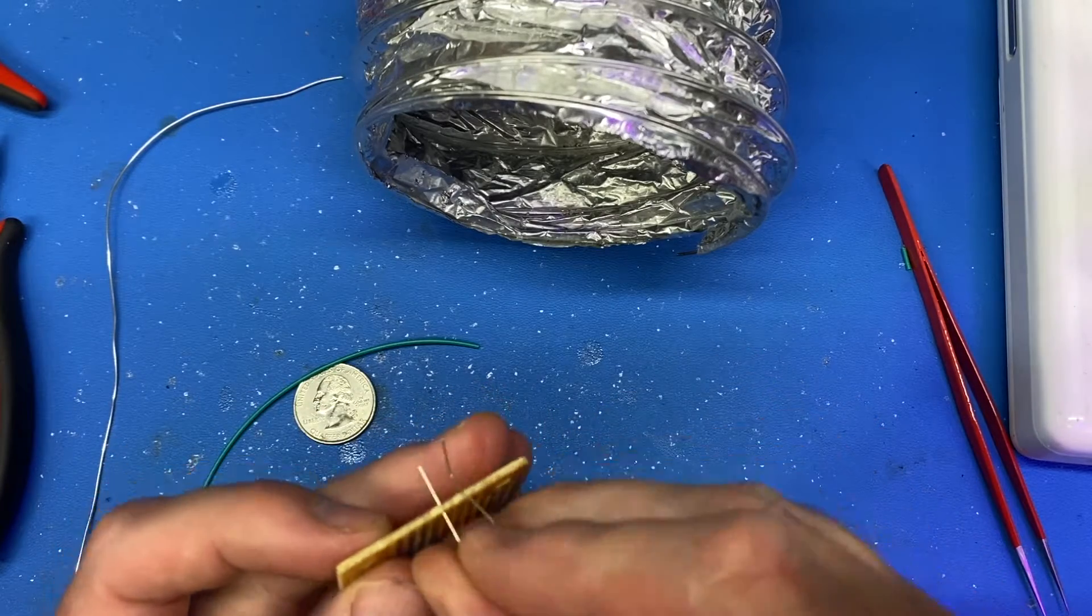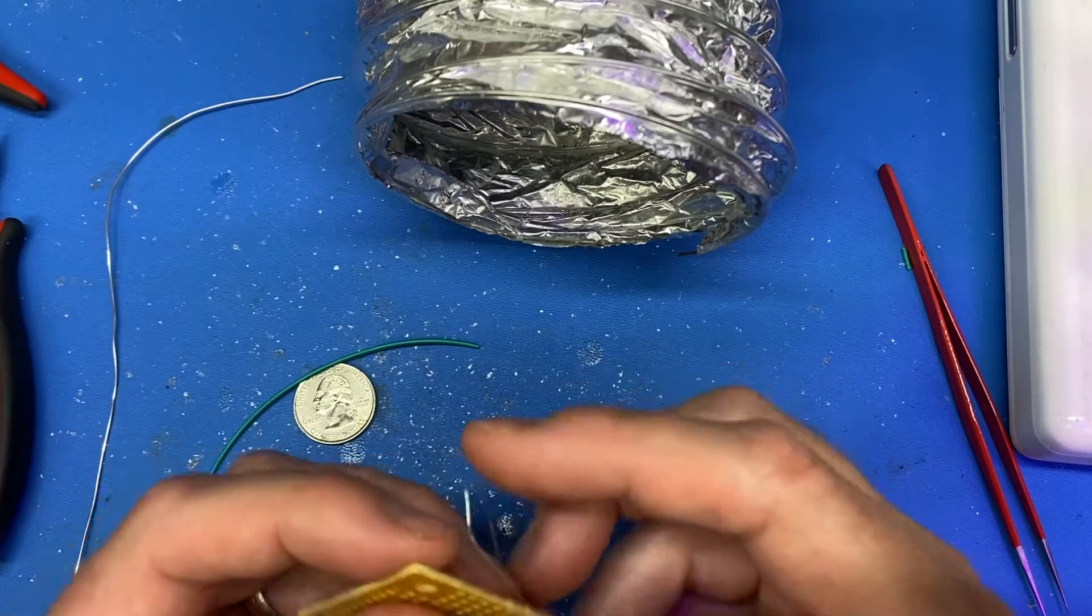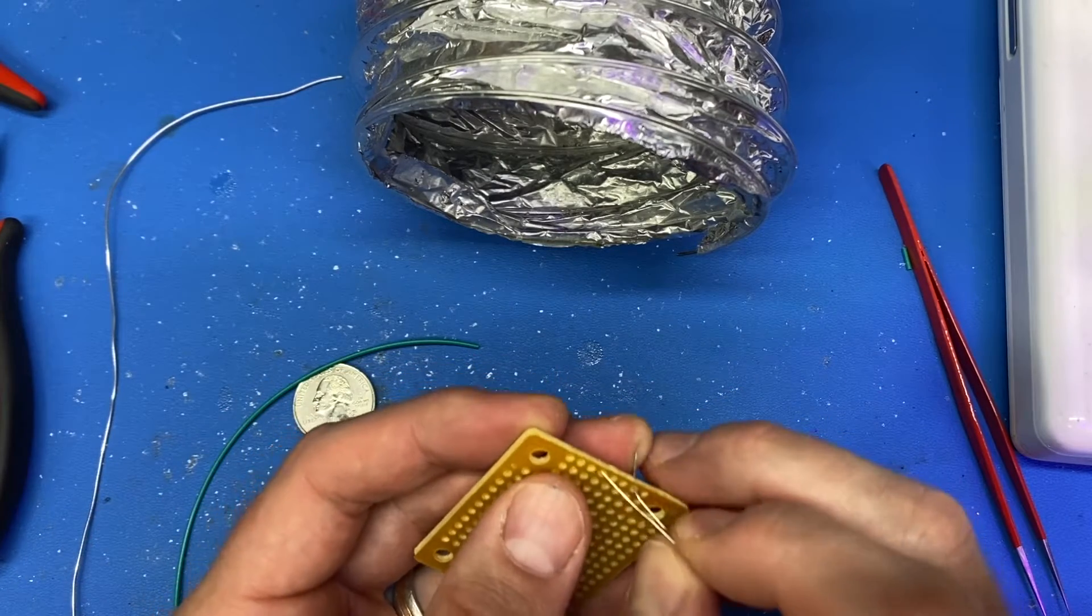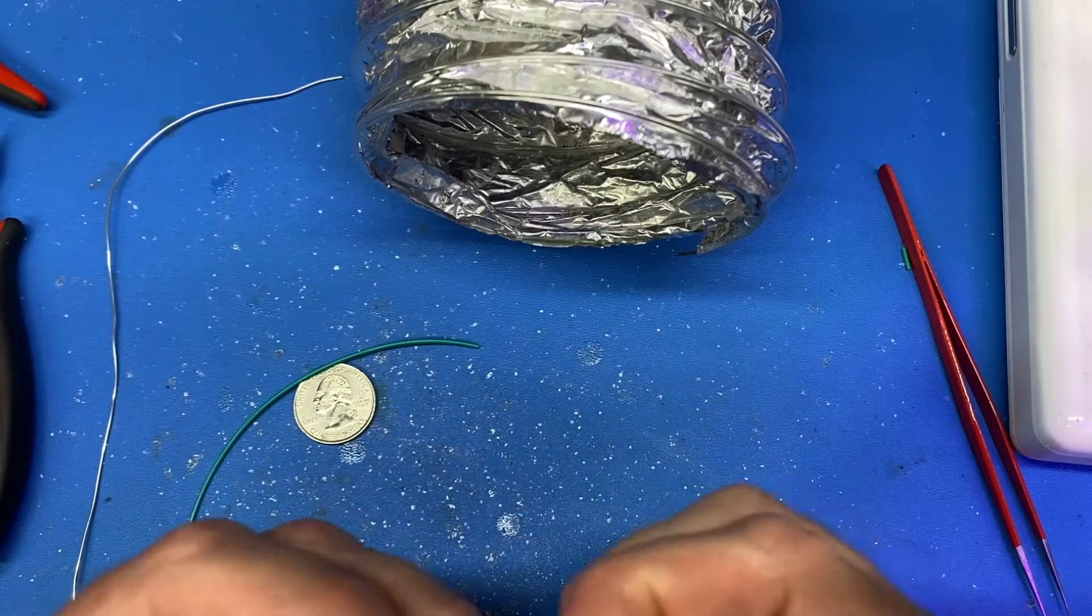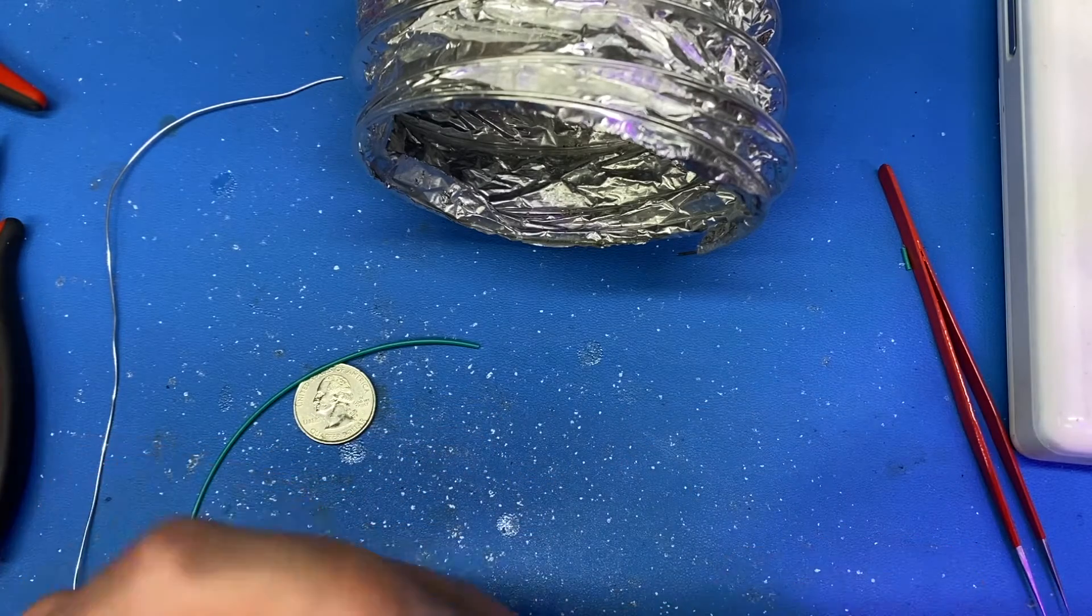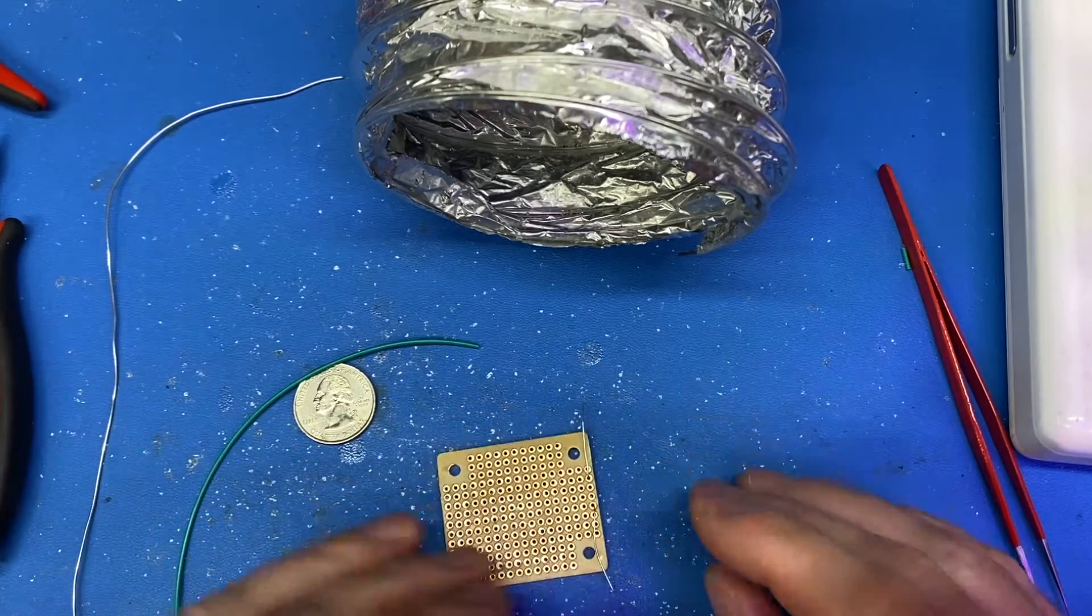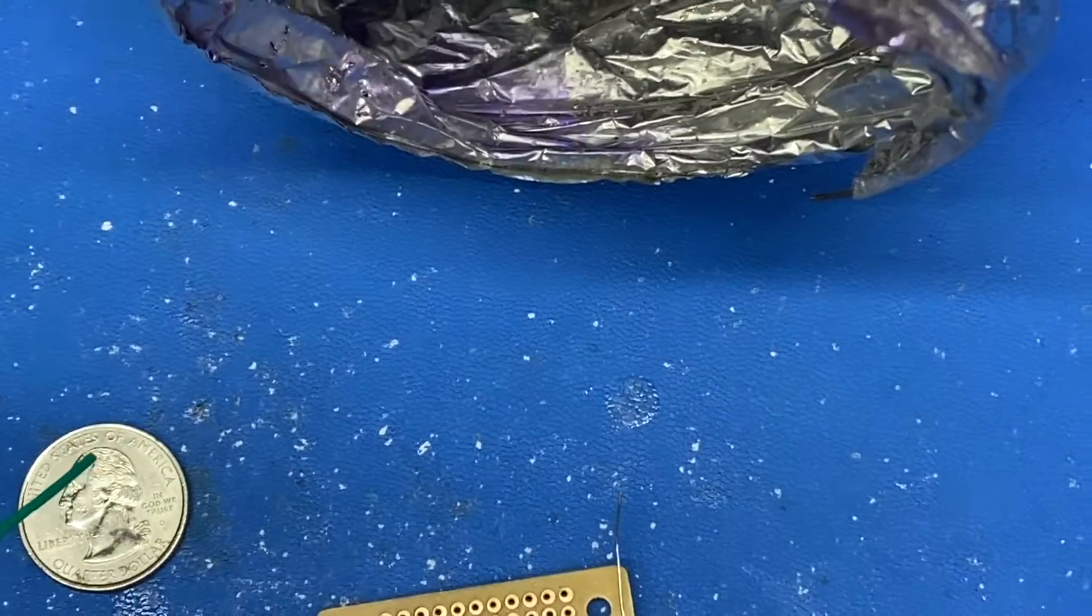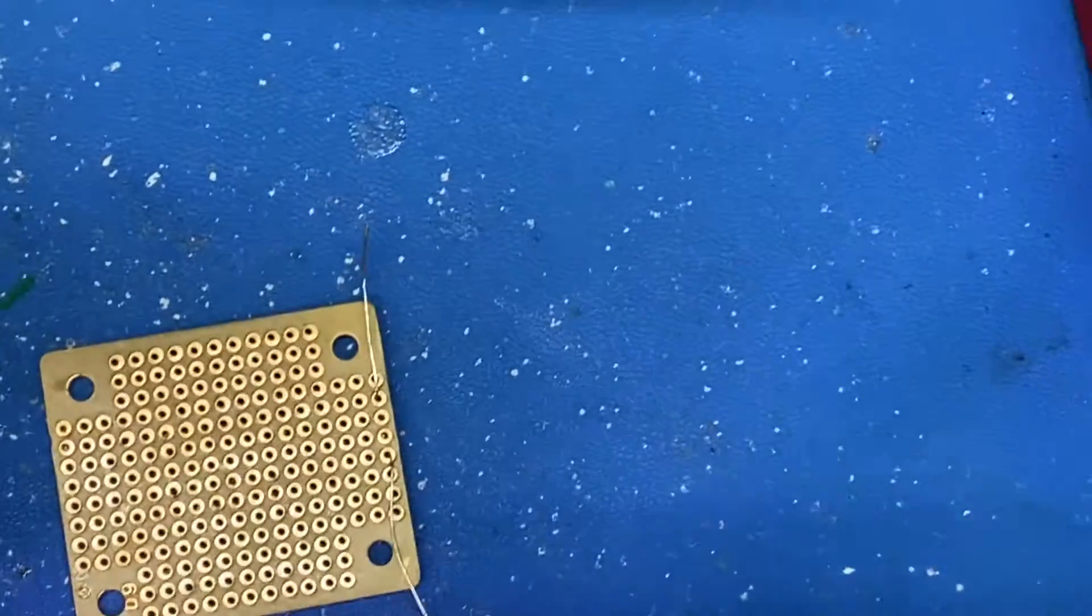So basically, you can do all sorts of ways to do this, but just put them in here. If I bend the leads it can keep it in place, and then you can just add a little solder where you need to.